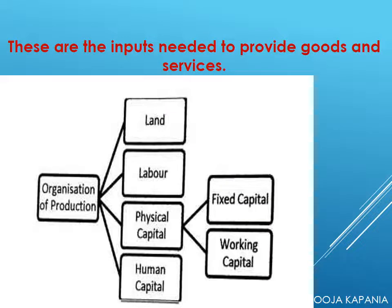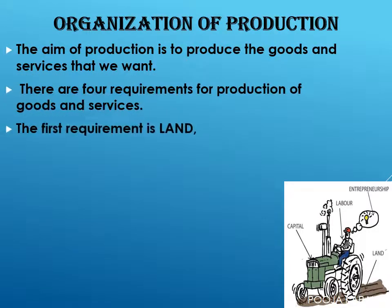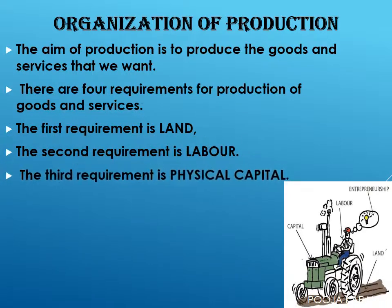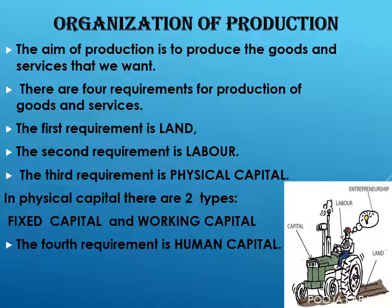Here we are going to see a flowchart that will show the inputs needed to produce goods and services. The aim of production is to produce goods and services that we want. There are four requirements for production of goods and services: the first is land, the second is labor, the third is physical capital (which has two types — fixed capital and working capital), and the fourth is human capital. I am going to explain them in the next few slides.